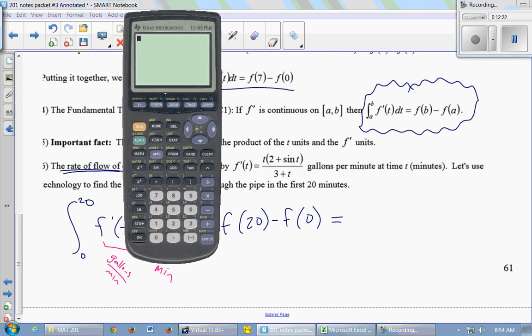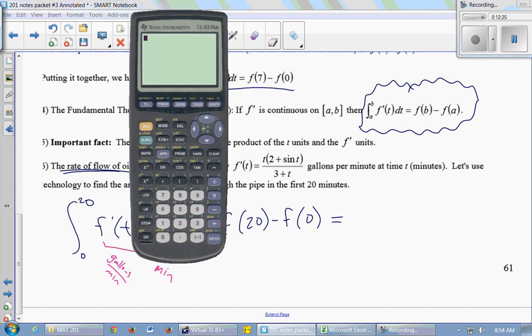So if you remember from last class, there's two ways to do this. You can graph it, and it will tell you the area, or you can do it all on the home screen. I like to do the graphing one because it reminds me what the integral represents, being the area under the curve. So I'll do that one. So x times 2 plus sin(x) divided by 3 plus x. And then I've got to choose a window. I'm interested in the first 20 minutes, so maybe I'll go 0 to 25 just so I can see a little bit more.